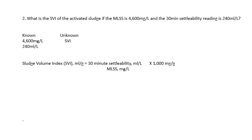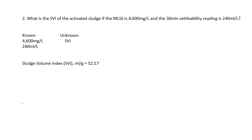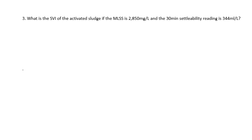Using the same formula, we plug all our numbers in: 240 milliliters per liter divided by 4600 milligrams per liter, times 1000 milligrams per gram. Everything will cancel out and leave you with 52.17 milliliters per gram.